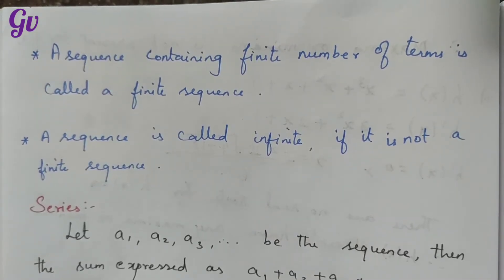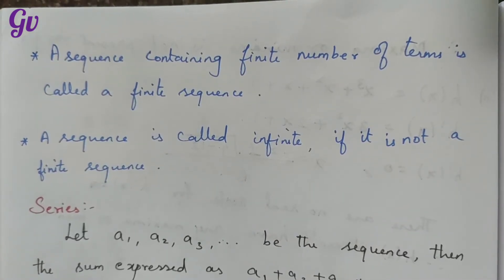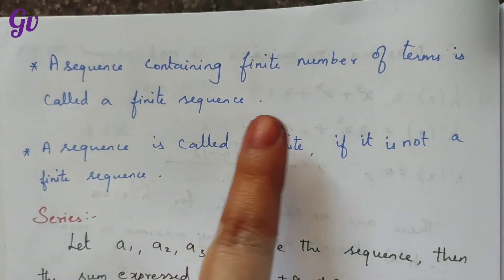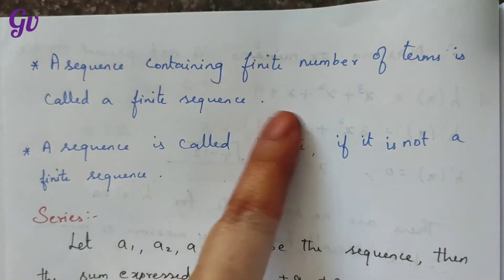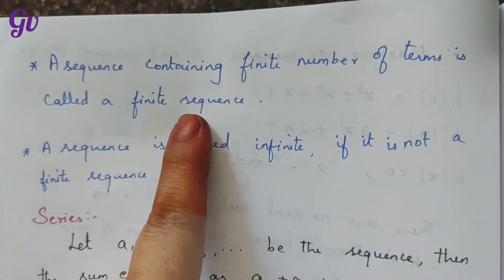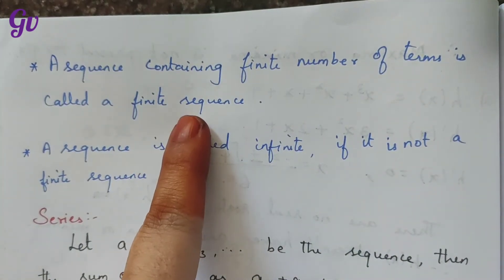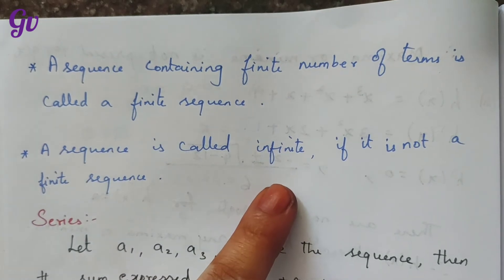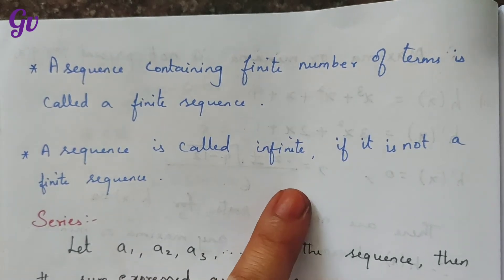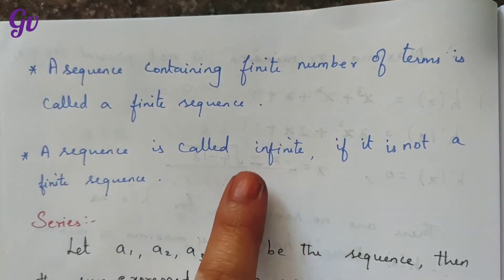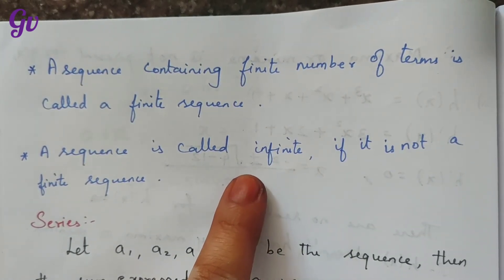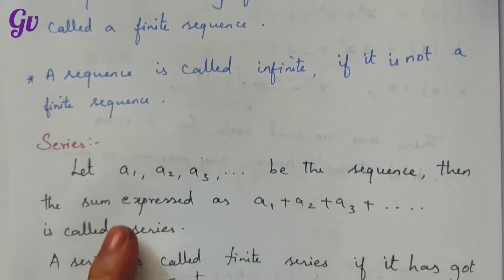Next point: a sequence that contains a finite number of terms is called a finite sequence. So if there are a finite number of terms, it is a finite sequence. Otherwise, it is an infinite sequence.